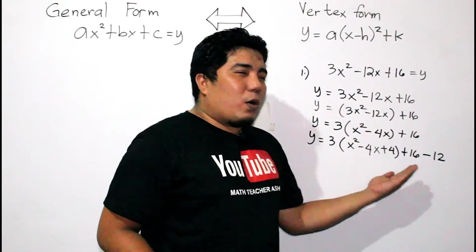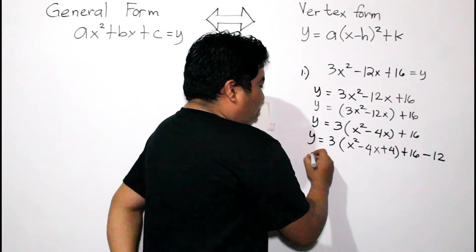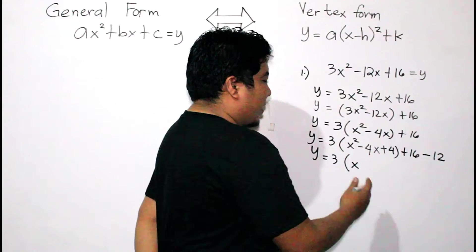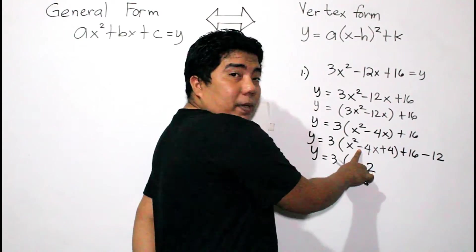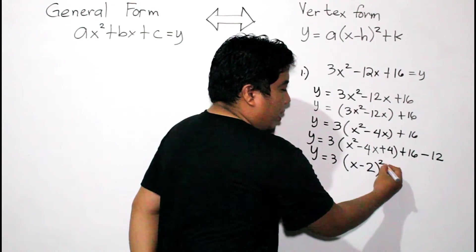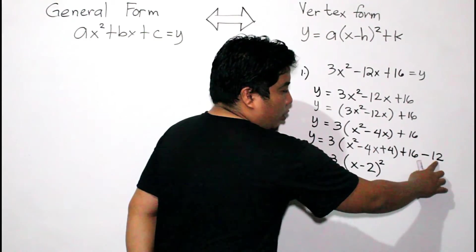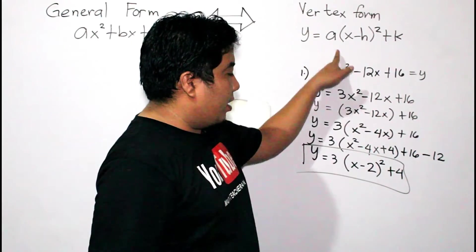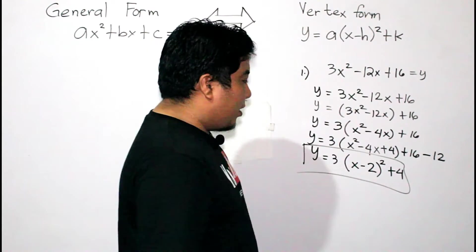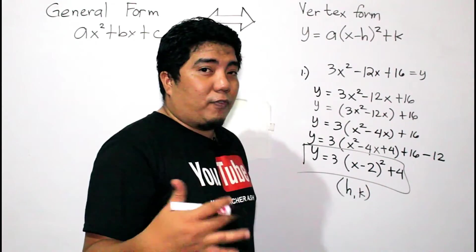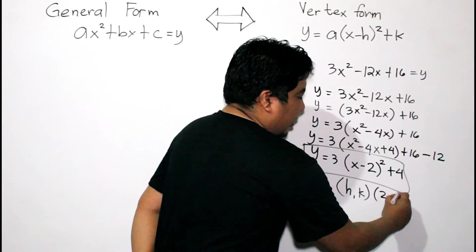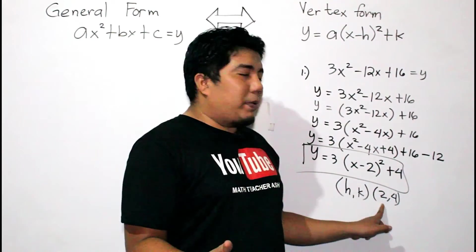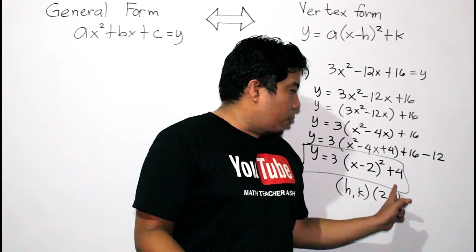Since the trinomial X squared minus 4X plus 4 is already a perfect square, we factor it. The square root of X squared is X, the square root of 4 is 2, and we copy the sign of the middle term — negative — giving us (X minus 2) squared. Then simplifying 16 minus 12 gives positive 4. So the final answer is Y equals 3 times (X minus 2) squared plus 4. Here, 3 is your A, 2 is your H, and 4 is your K.